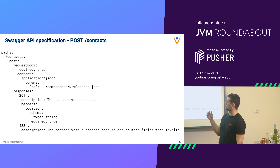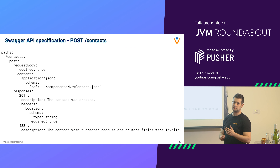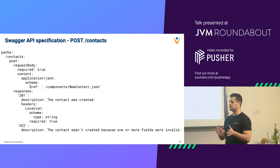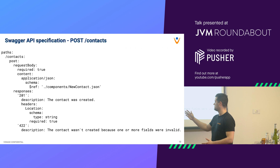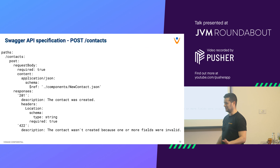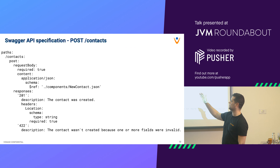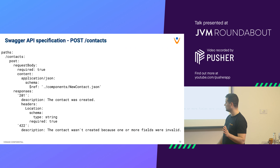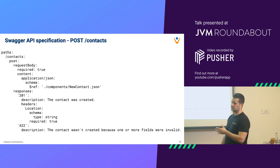I'll start with Swagger — a popular API specification framework. It's not really a framework in that it doesn't do the work for you; it just allows you to describe your API, similar to JSON API or GraphQL. I sketched this fake API: you have a contacts endpoint where you can POST a contact. You can describe the request body, whether it's required, the content type, and link it to a new_contact.json schema which defines the payload the POST accepts.